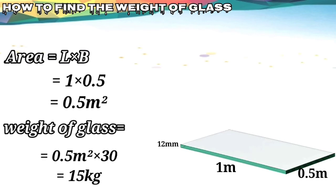How much for 0.5 meter square will be? 0.5 meter square multiplied by 30, you can get the answer 15 kg. So the weight of that particular glass is 15 kg.